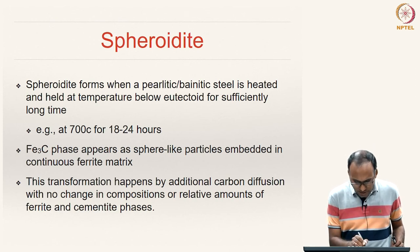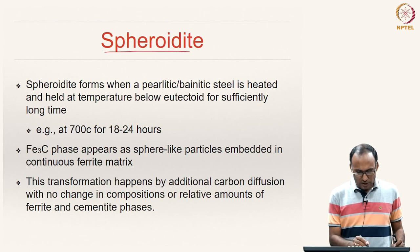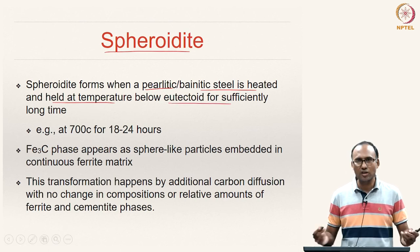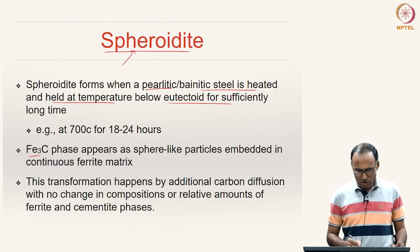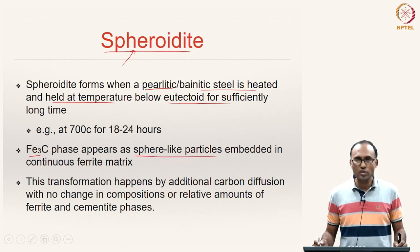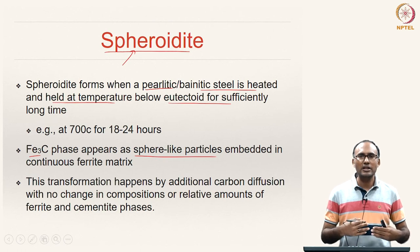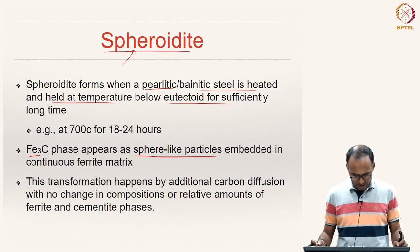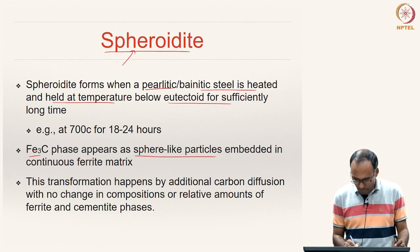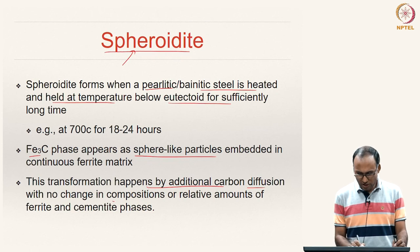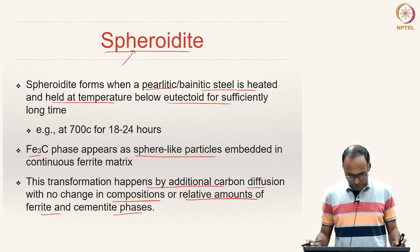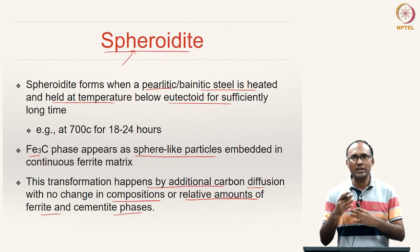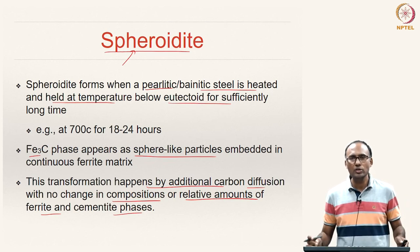Spheroidite forms when pearlite or bainite steel is heated and held at temperatures just below the eutectoid for a sufficiently long time. The cementite phase adopts sphere-like particles embedded in a continuous ferrite matrix, because the cementite network can otherwise be detrimental to overall properties. This transformation occurs by additional carbon diffusion with no change in composition or relative amounts of ferrite and cementite — only the cementite network breaks up into small spherical particles.